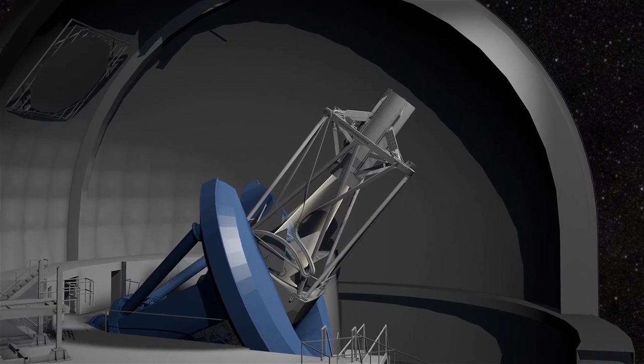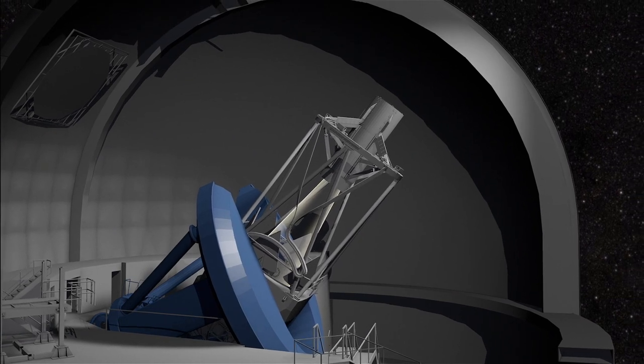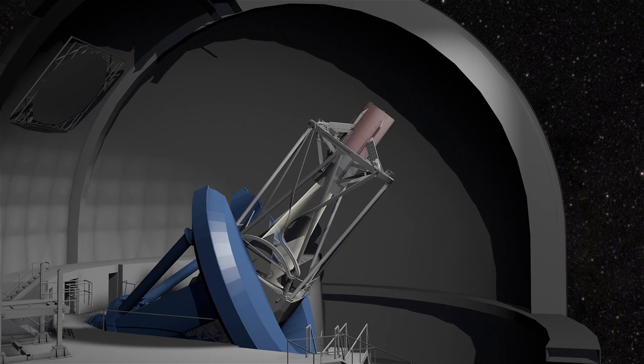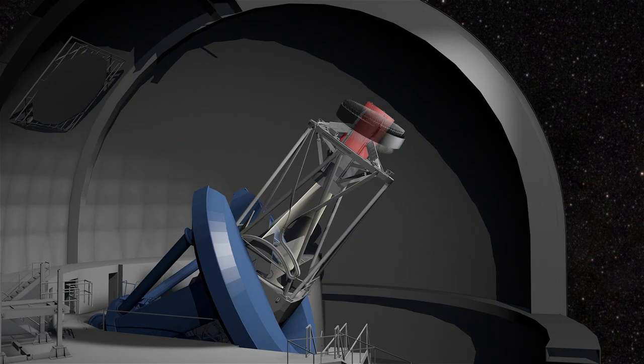After passing through the set of lenses, the galaxy's light reaches fiber optic cables in DESI's focal plane, at the top end of the telescope.